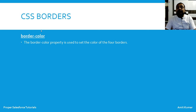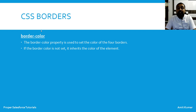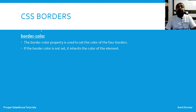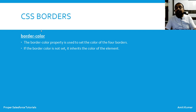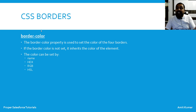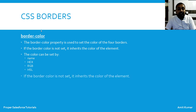Border-color, as the name suggests, is a property used to set a specific color to the four borders. If the border color is not set, it inherits the color of the element — whatever color the parent element has will automatically be applied to the border. The color can be set by name, hexadecimal value, RGB, or HSL.